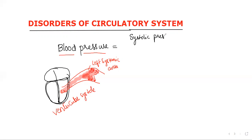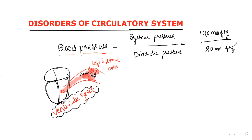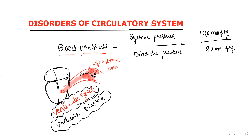Very important: which systole — atrial systole or ventricular systole? Ventricular — that we have to remember. Systolic pressure by ventricle means during the contraction of the ventricle, the pressure created in the walls of the blood vessel is 120 mmHg. We call it systolic pressure. During relaxation — ventricular diastole — the blood pressure in the blood vessel walls is 80 mmHg. That is diastolic pressure.